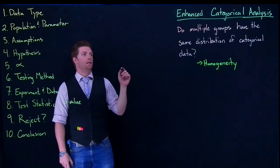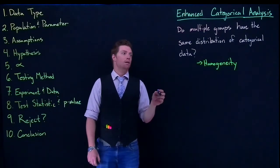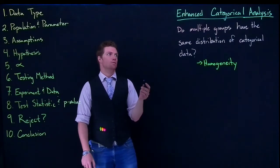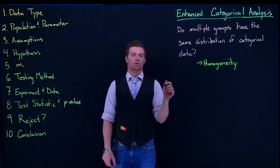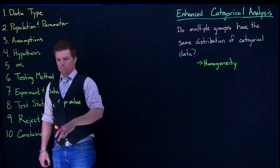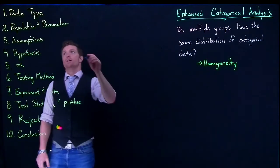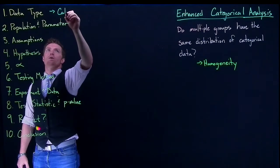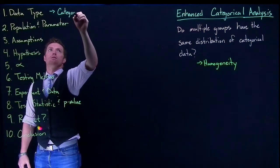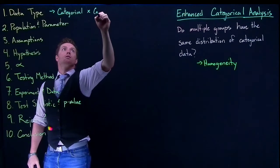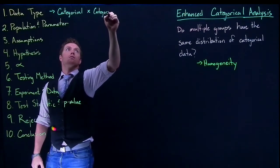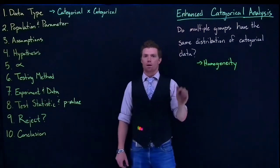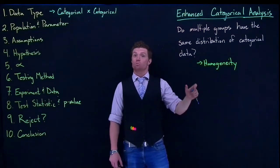Another enhanced categorical analysis technique is the homogeneity test, which answers the question: do multiple groups have the same distribution of categorical data? Looking at our steps of hypothesis testing for this scenario, step one is our data type — this one is going to be categorical by categorical, because we're looking at some piece of categorical data across multiple groups.